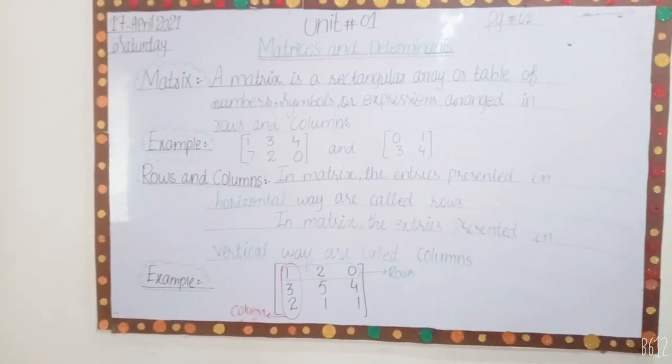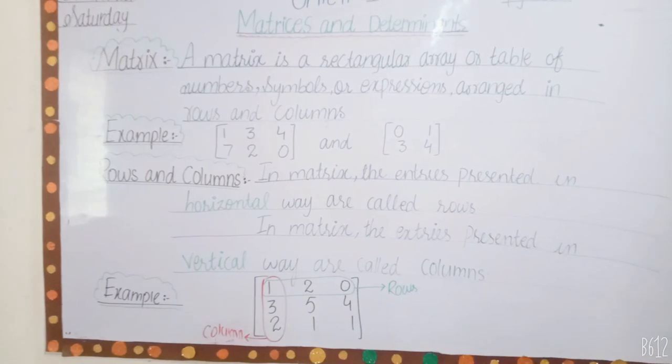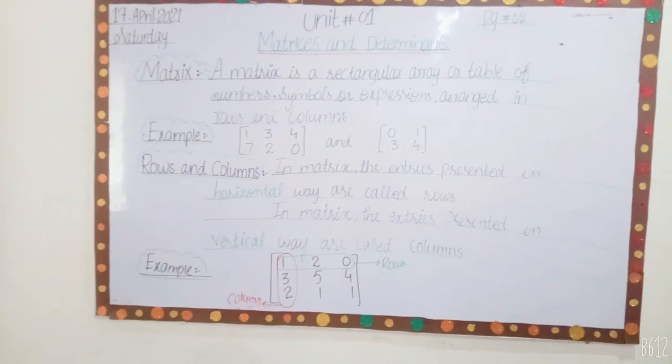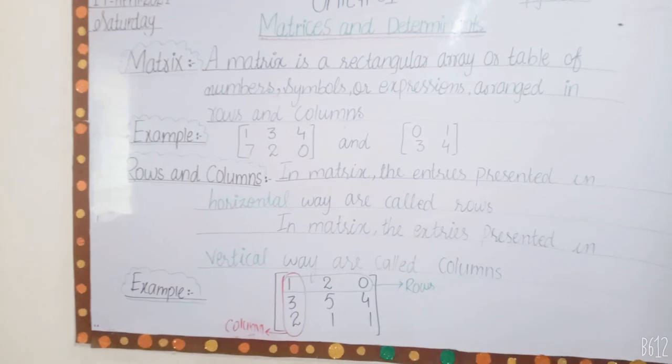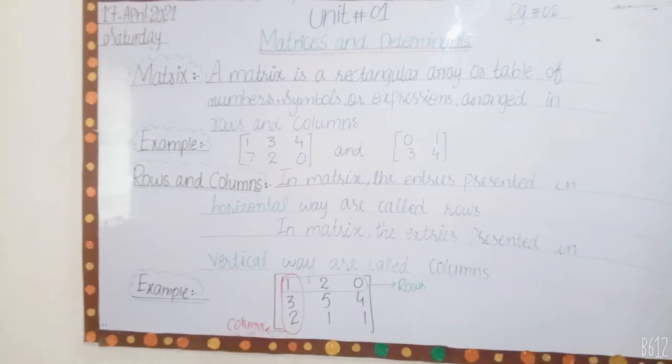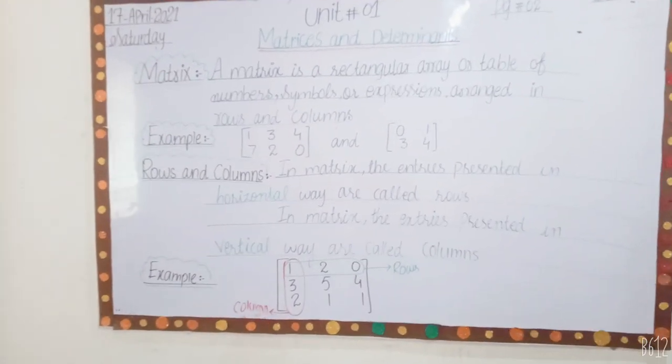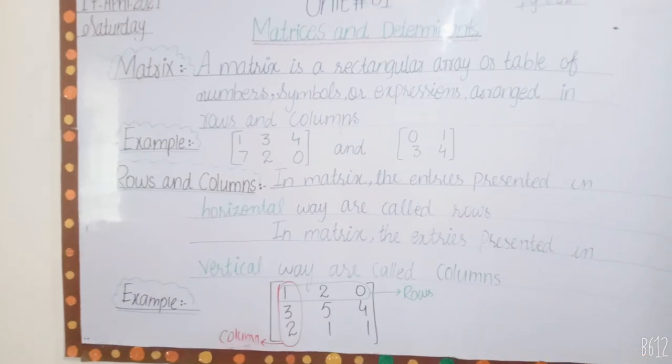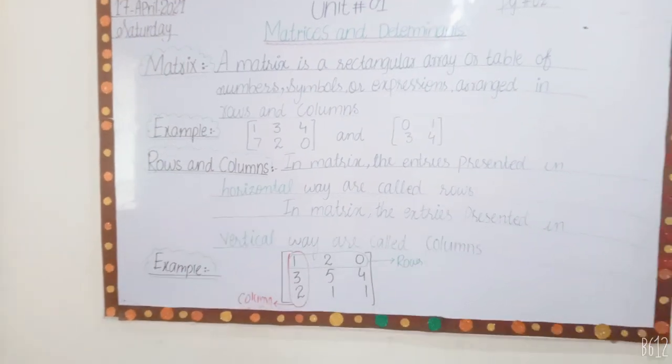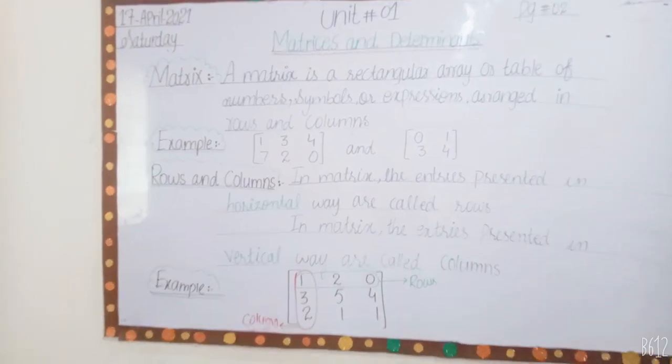When we arrange our numbers, we have to arrange them in rows and columns form. Matrix example: one, three, four, seven, two, zero. I have arranged numbers in this rectangular area.